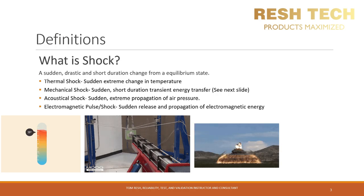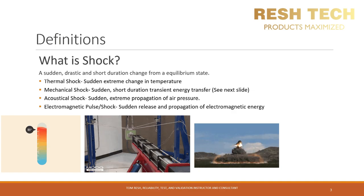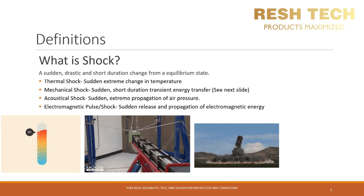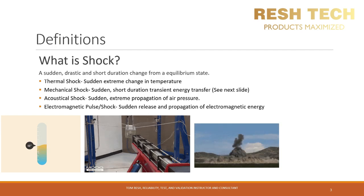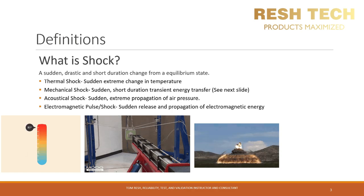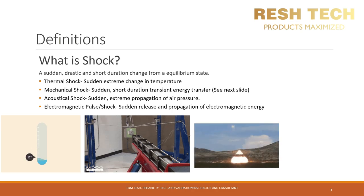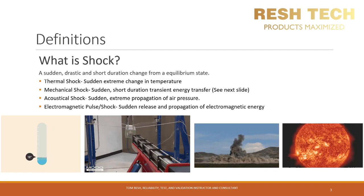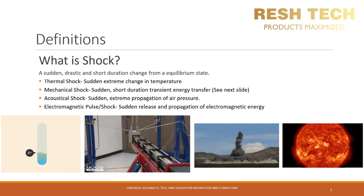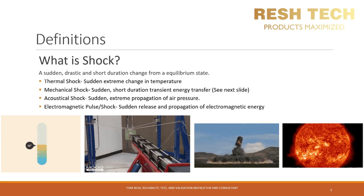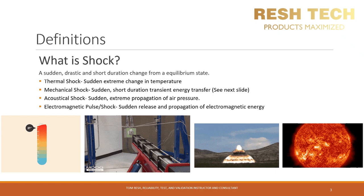Another example is acoustical shock, which is a sudden and extreme propagation of air pressure. An example is the instantaneous movement of air from an ordnance blast — you can hear a sound from the change in air pressure, or if you are really unlucky, physically feel the acoustic shock wave if you are within close proximity. The last type of shock from a physics perspective is electromagnetic shock, which is a sudden release and propagation of electromagnetic energy. Examples include a solar flare or the detonation of a nuclear weapon.